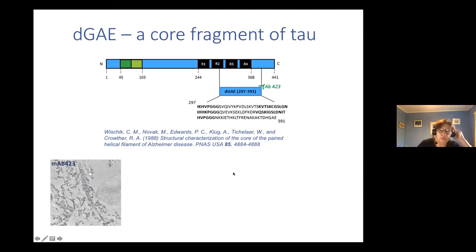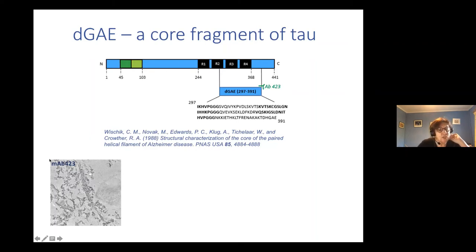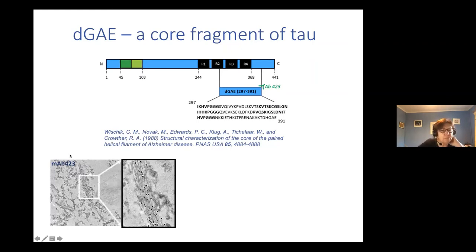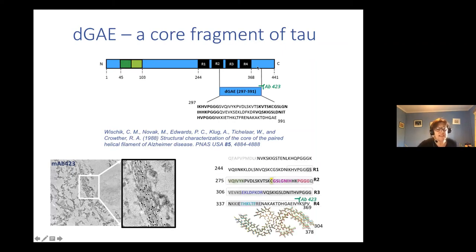What we wanted to do was create a new model structure, so we worked with a peptide we call DJE — a core fragment of tau first discovered in 1988. It covers mainly R3 and R4, which correlates nicely with the core structure obtained from cryoEM. An antibody was raised recognizing the C-terminus of this protein, called AB423, and a student of mine used this antibody on paired helical filaments in tissue and found they stain nicely, suggesting that some tau in these PHFs is a truncated form with C-terminal truncation at residue 391, overlapping with the cryoEM structures solved from residues 304 to 378, shown in grey with the DJE sequence highlighted in pink.